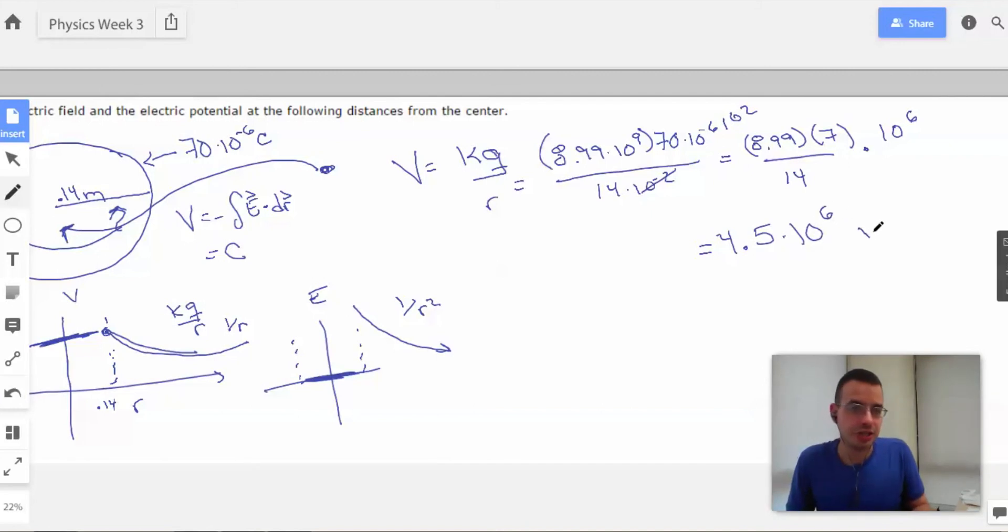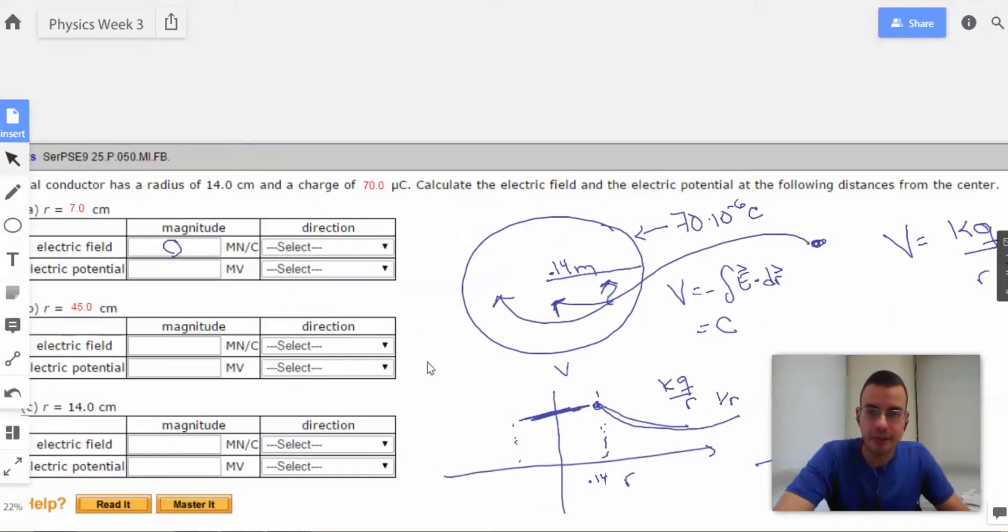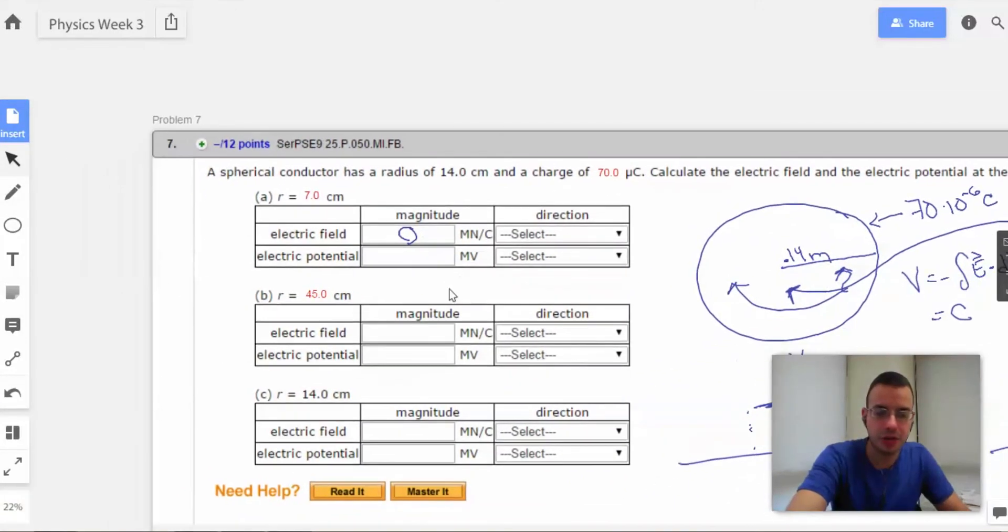Here we have 4.5 times 10 to the 6th. This is going to be either volts or joules per coulomb, whichever you enjoy. And when we convert that into megavolts, we're going to have just 4.5, 4.5 megavolts.